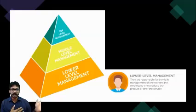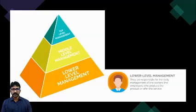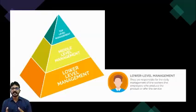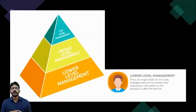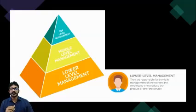Lower level management is responsible for the daily management of line workers — the employees who produce the product or offer the service. These include production site engineers, production heads, diploma holders, ITI workers, and similar personnel. The supervisor at this level looks after the people doing the main work of the organization. Without this bottom of the pyramid the organization will not function, and the supervisor ensures everything runs smoothly.